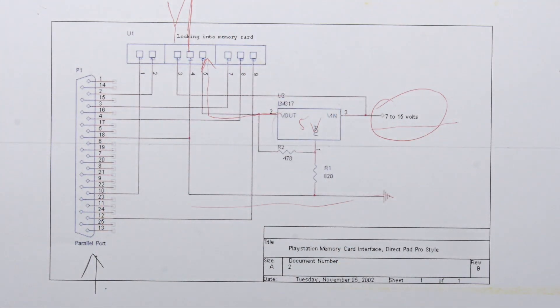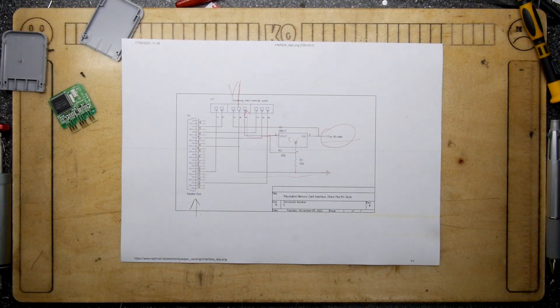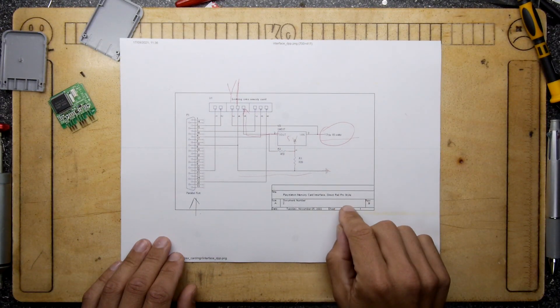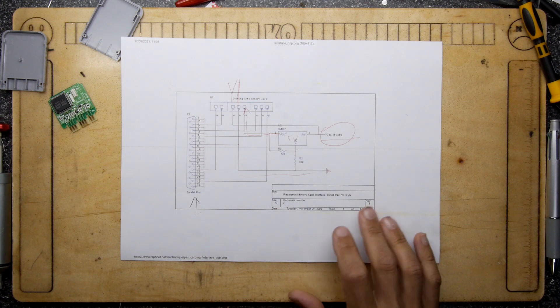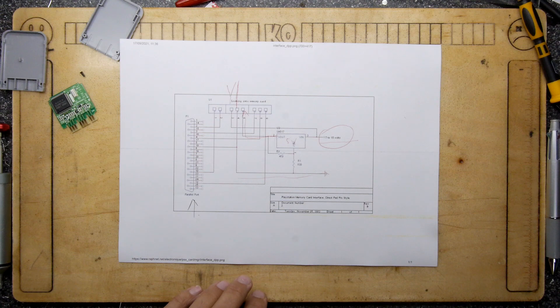But yeah, the basic idea of this was that if you made this interface and you had a parallel port, you could hook it up to a PC, and that would allow you to read the memory of this card. And actually, if you look, somebody has made Windows software that does that, and there's Linux software. So you just Google that and you'll find it. I mean, it probably is here: Rafnet Electronic PSX Card Manager. You'll Google it.